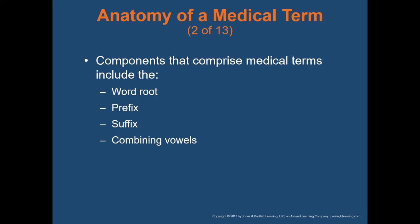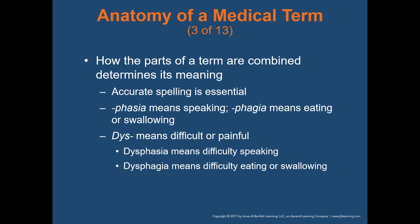Components that comprise medical terms include the word root, which is the main meaning of the term; the prefix, like hyper or hypo; the suffix, which comes after the word; and combining vowels, which join all parts of a medical term together. How the parts of a term are combined determines that term's meaning.